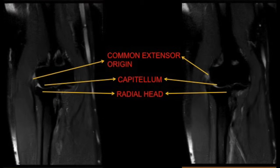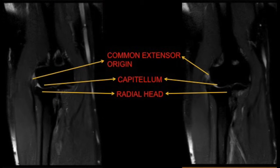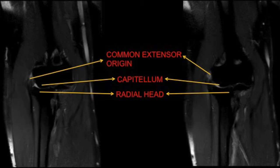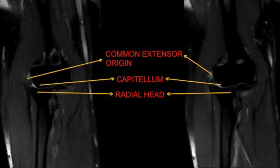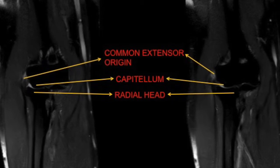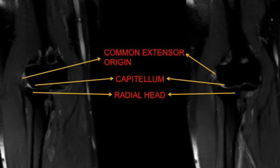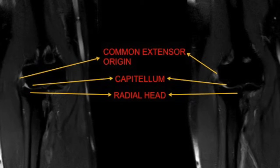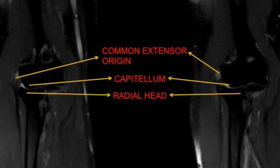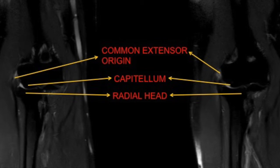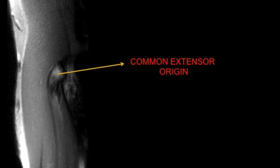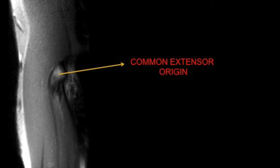Patient presented with pain and swelling in the lateral aspect of the elbow joint. On examination, there was considerable tenderness in the region of the lateral epicondyle of the humerus. This patient was not responding to conservative treatment and an MRI was requested by the treating physician.